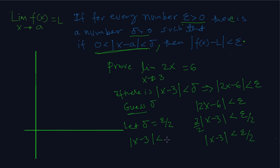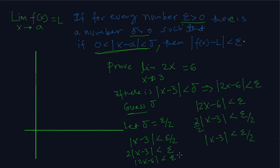Okay, so let delta be epsilon over 2. Now if x minus 3 is less than delta, and delta is epsilon over 2, then if we multiply both sides by 2, we get 2 times the absolute value of x minus 3 is less than epsilon. That's how it works.